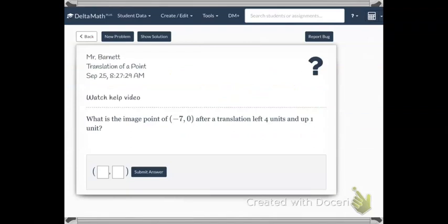All right. Okay, so in this one, we want to find the image of the point negative 7, 0 after a translation left 4 units and up 1 unit. And we are going to do this with no graph at all. We're just going to work this out. So I'm going to write down my point, negative 7 and 0.